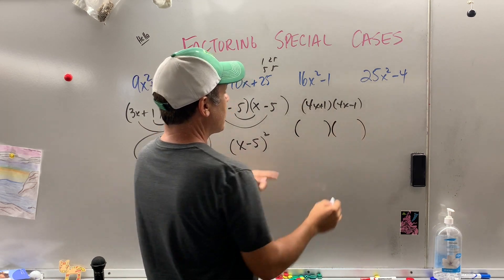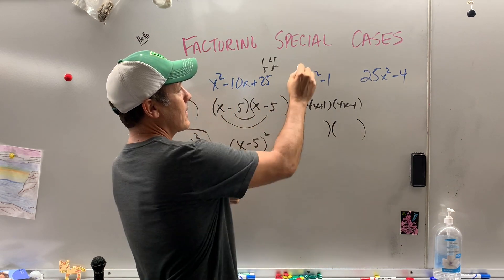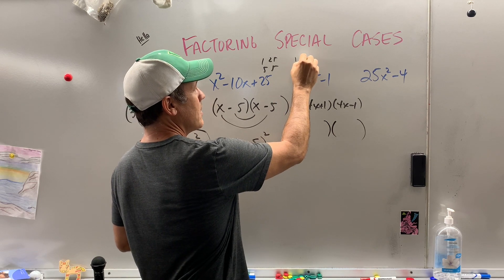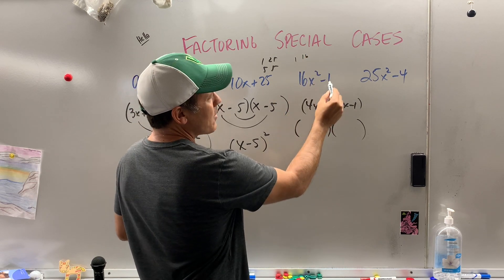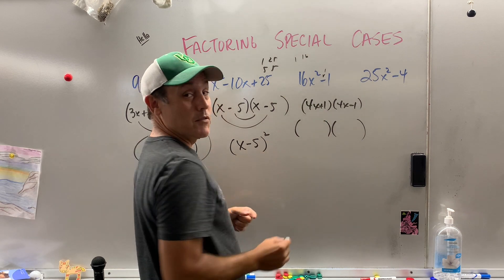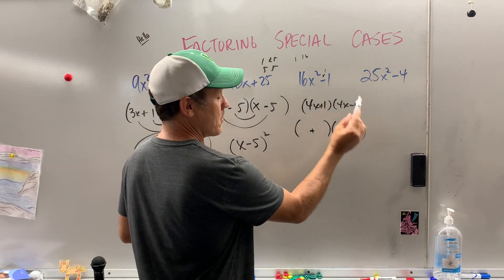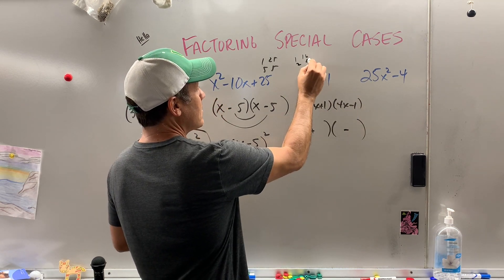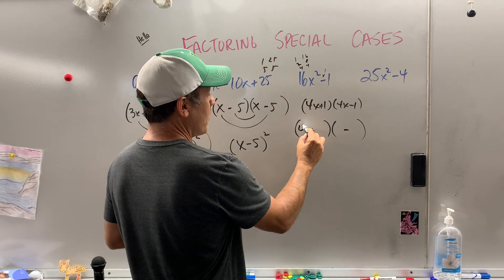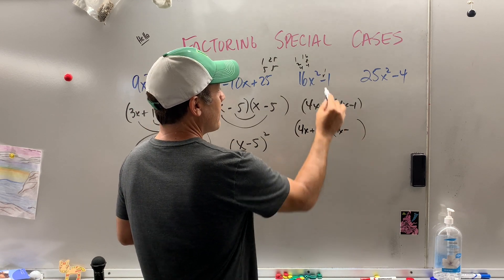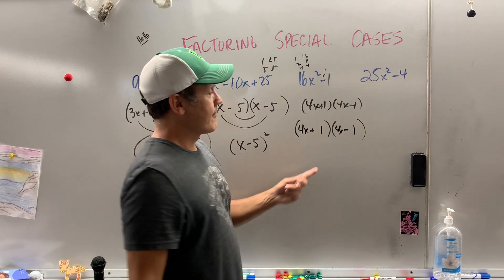Parenthesis, parenthesis. 16 only has factors. Ooh, it's got a lot of factors. 1 and 16. Well, first of all, what are the signs? What times what gives you a minus? Plus, minus. So we got that. 1 and 16, 2 and 8, 4 and 4. I'm going with 4 and 4. Factors of 1.